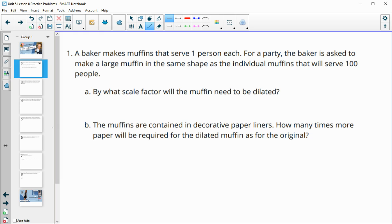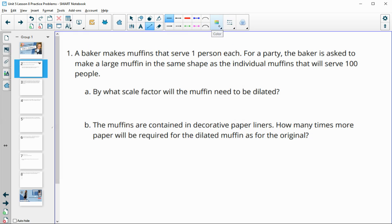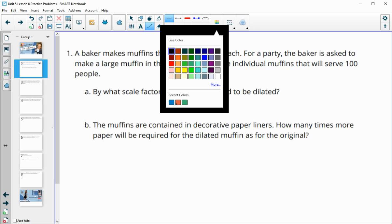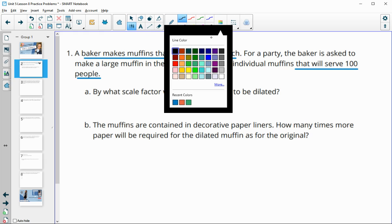Number one says that we have a baker who makes muffins that serve one person each, which is going to be a volume measurement. For a party, the baker is asked to make a large muffin in the shape of an individual muffin that will serve 100 people. So by what factor will the muffin need to be dilated?